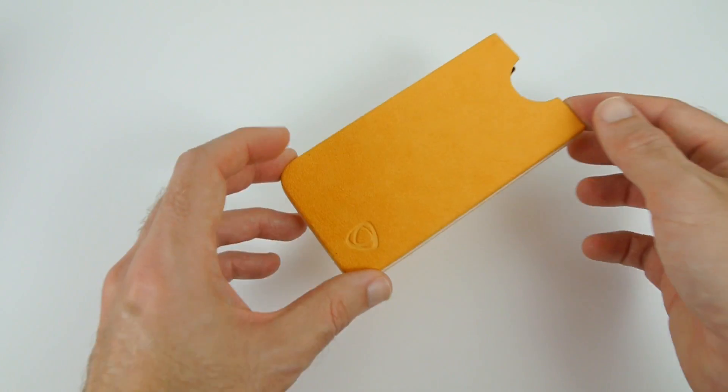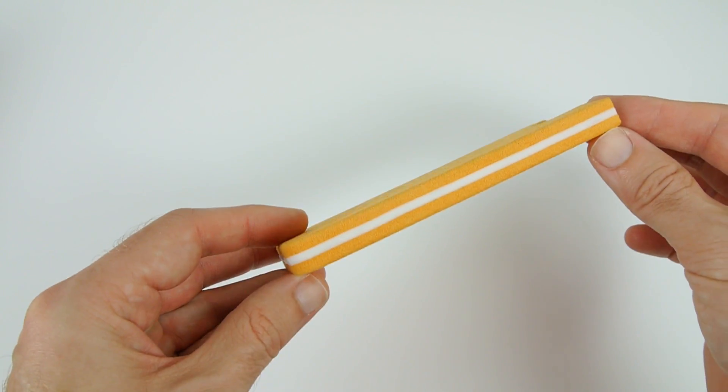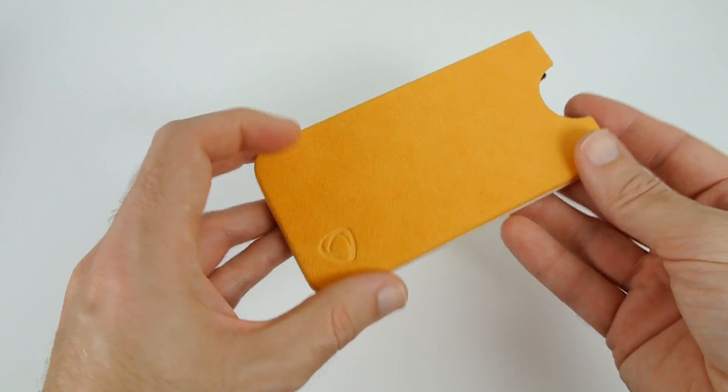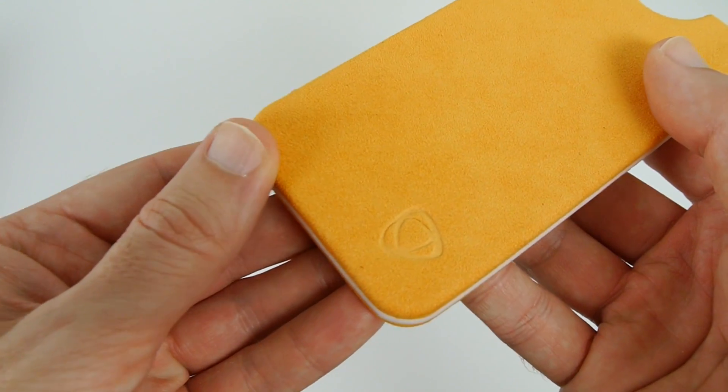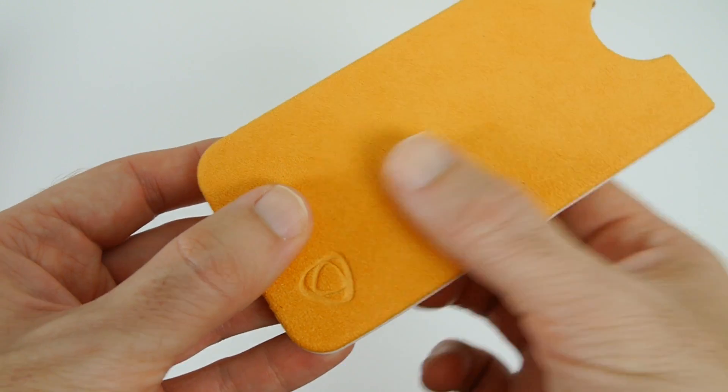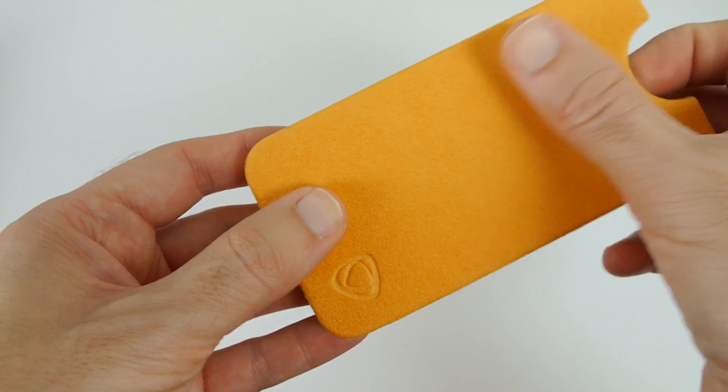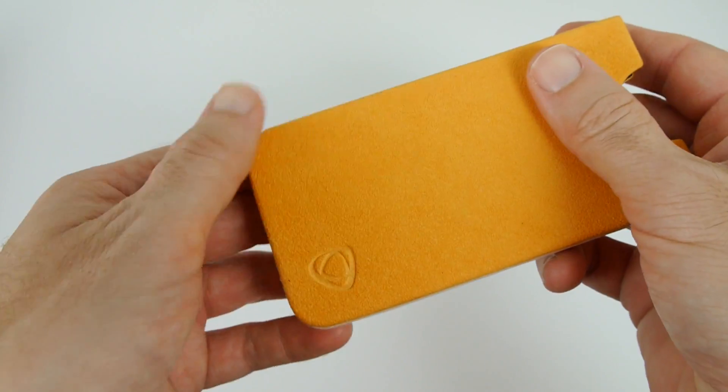And here we go. This is what it looks like without my iPhone in. Really, really nice. So let's have a look a bit closer at the grain of this. I'm pretty sure this is going to be some sort of nubuck or leather or suede.